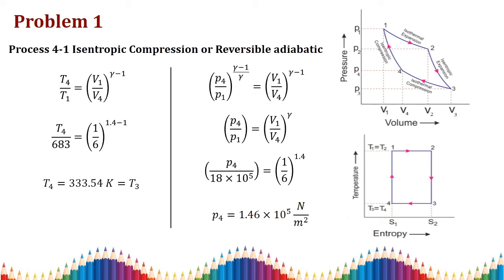For process 4 to 1, isentropic compression, the PVT relation gives: t4/t1 = (p4/p1)^((γ-1)/γ) = (v1/v4)^(γ-1). Taking γ = 1.4 for air and v4/v1 = 6, we substitute to get t4 = 333.54 K. Since process 3 to 4 is isothermal compression, t3 = t4 = 333.54 K.